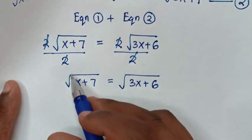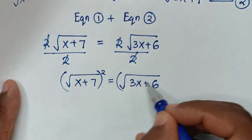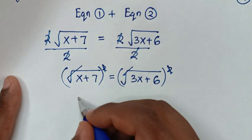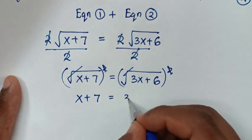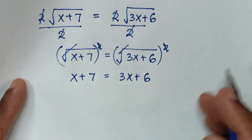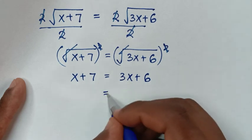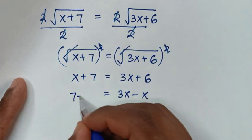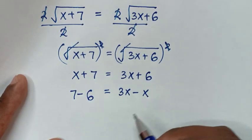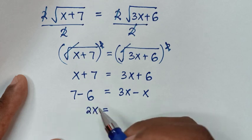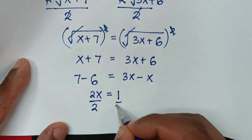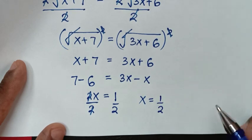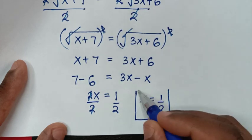Since we have square roots on both sides, we square both sides. The square roots cancel with the squares, giving x + 7 = 3x + 6. Rearranging: 7 minus 6 equals 3x minus x, so 1 = 2x. Dividing both sides by 2 gives x = 1/2. This is the final answer.